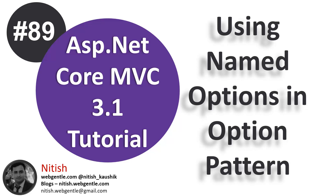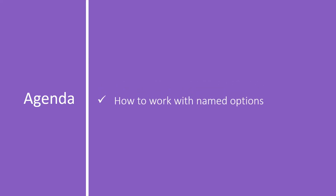Welcome again to ASP.NET Core tutorial. In this video we will learn how we can use named options in our ASP.NET Core application while working with the option pattern. This option pattern is used to read the configurations from our appsettings.json file. We need to learn how to work with named options, and first let's understand what is the need of using these named options.